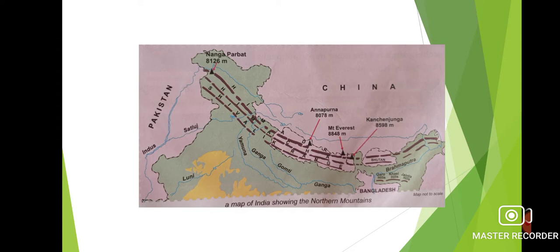The Himalayas are divided into three rows of mountains that run alongside each other like layers. The topmost, close to the China border, are the Greater Himalayas known as Himadri. Below that are the Middle Himalayas, called Himachal. Then lie the Outer Himalayas, the Shivalik range. So the three ranges are: Himadri, Himachal and Shivalik.